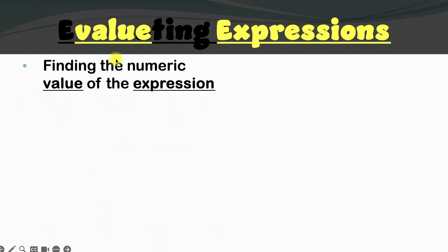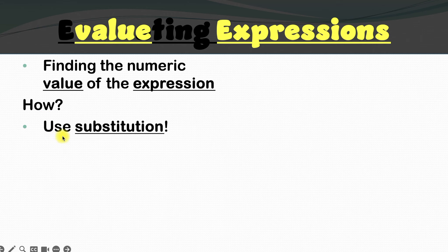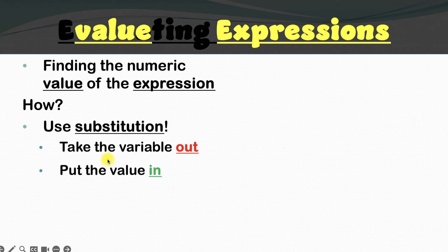So first of all, what exactly does it mean when we say evaluating expressions? Evaluating sounds like a fancy word, but if you read it slowly, you'll see that inside the word 'evaluate' is the word 'value.' So when we say evaluating expressions, all that's happening is you're finding the numeric value of the expression. We do that using something called substitution — taking the variable out of the expression and putting the value it represents in its place.